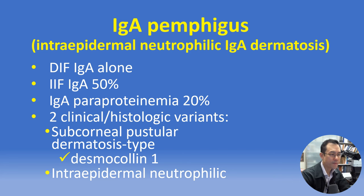IgA pemphigus is a very rare type of pemphigus defined by deposition of IgA rather than the typical IgG or C3. There are two clinical pathologic variants: a subcorneal pustular dermatosis (Sneddon-Wilkinson disease) type associated with desmocollin 1, as well as a more heterogeneous intraepidermal neutrophilic type. In addition to IgA pemphigus there is also an IgA/IgG overlap pemphigus — these are beyond the range of further discussion for this session but worth knowing they exist.